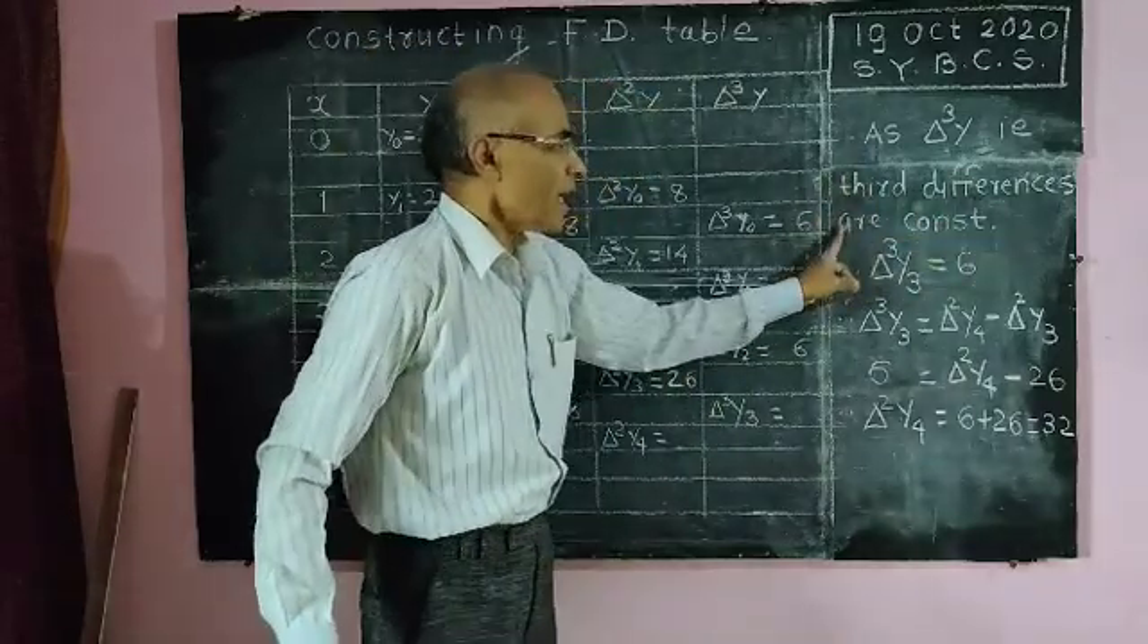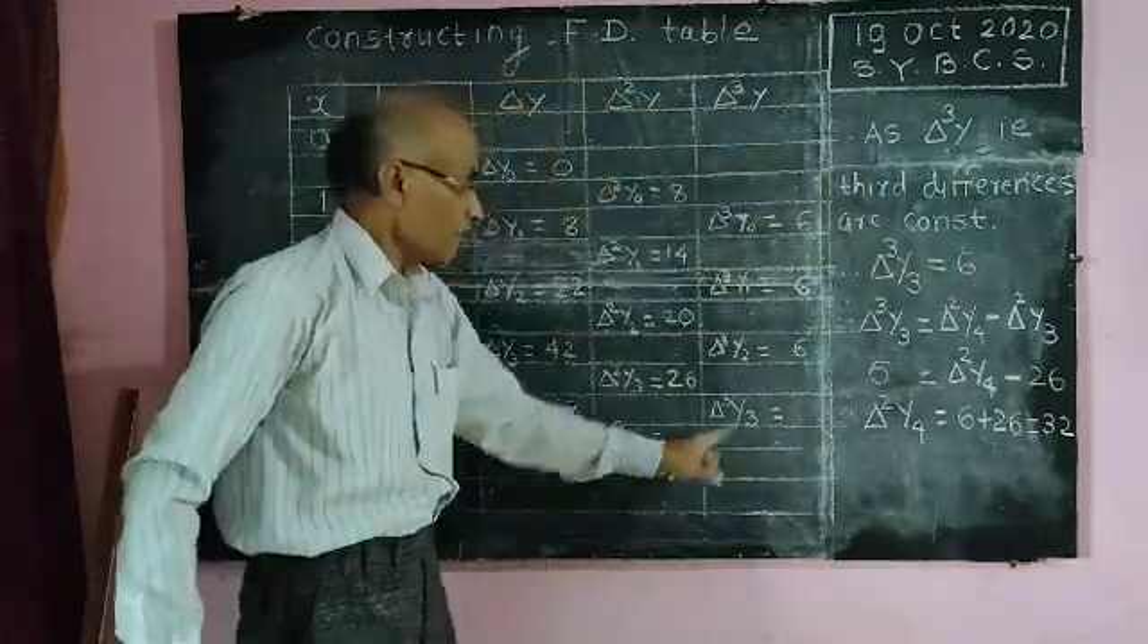Now, after constructing this table, we know, we observe that every third difference quantity is constant, that means third differences are constant. These are third differences: 6, 6, 6. So, definitely this must be 6. So, here I write, delta cube y3 is 6.